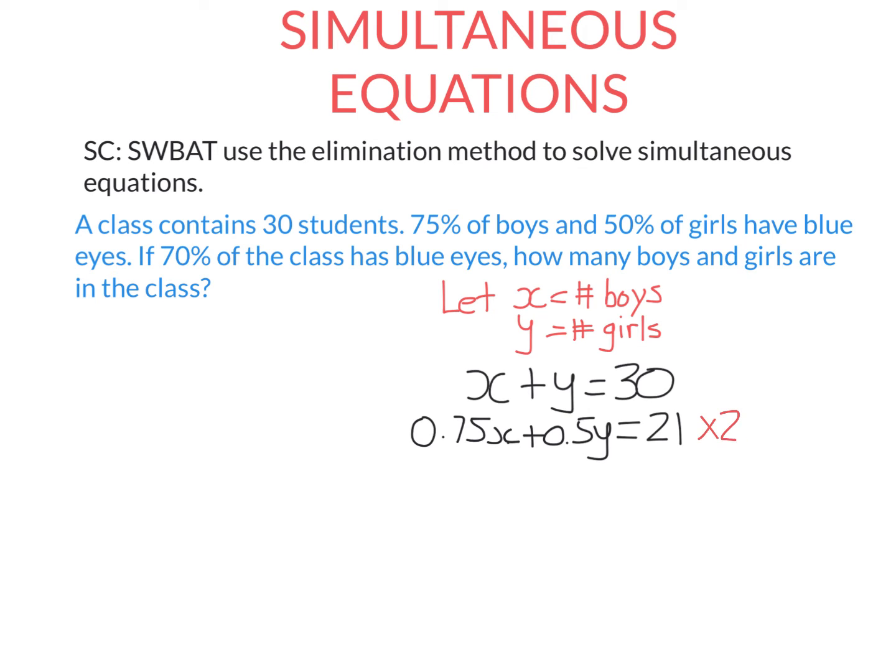If I multiply this bottom equation by two and leave the top one unchanged, I need to multiply everything by two. So I multiply 0.75x by two, 0.5y by two, and 21 by two. Now the y's have the same coefficient in both equations.